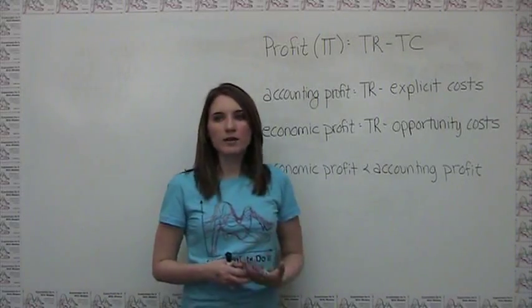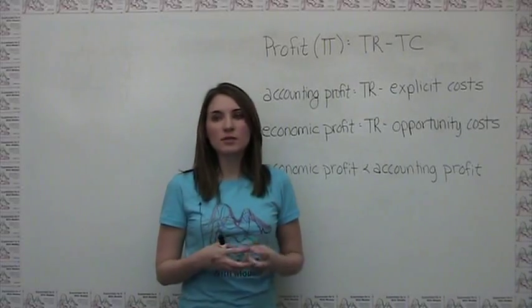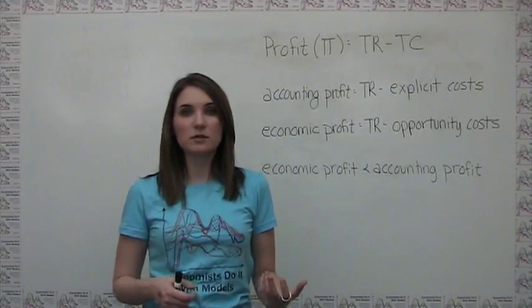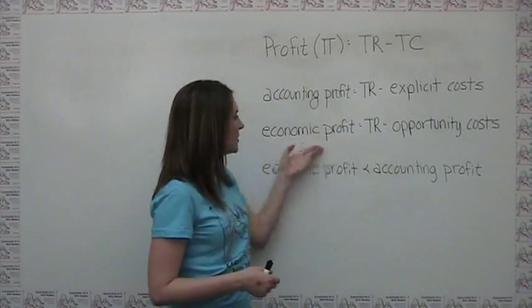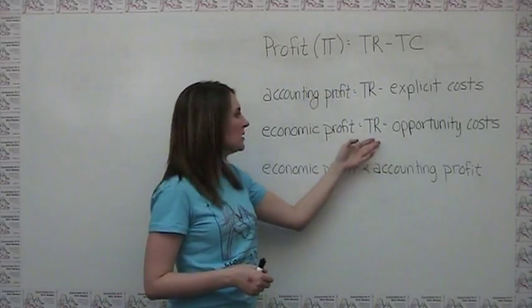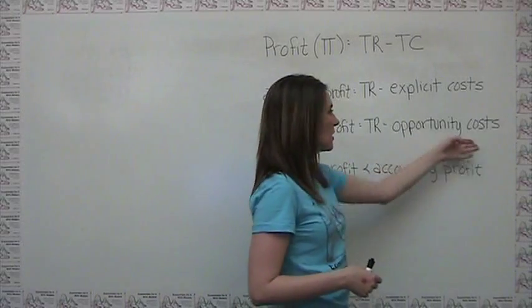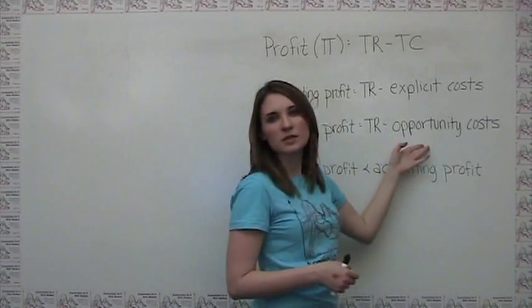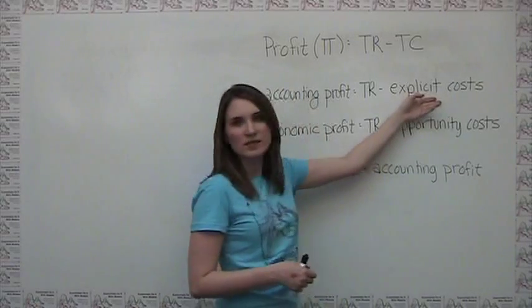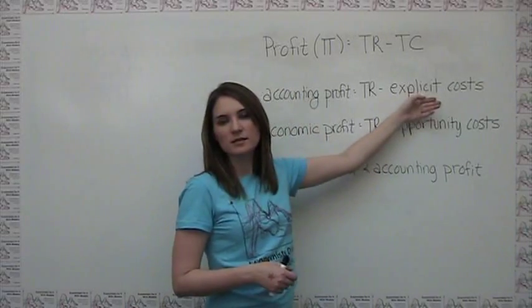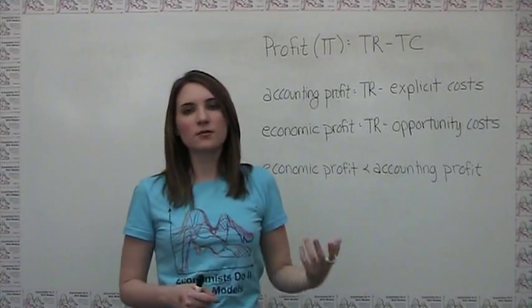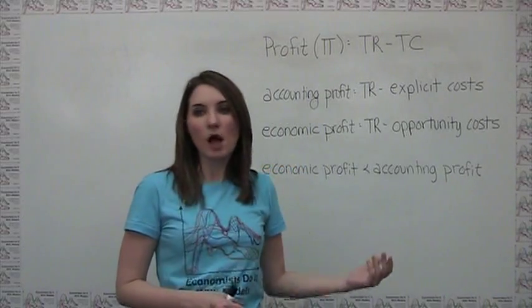Economic profit, on the other hand, counts all opportunity costs in the profit calculation. Economic profit is just the money we're taking in, minus our opportunity costs. And opportunity costs include not only the explicit costs counted in accounting profit, but also those implicit costs of foregone opportunities.